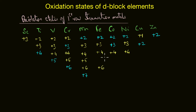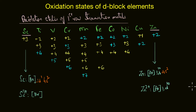There are only two elements that show a single oxidation state, and those are found at either extreme ends of the series: scandium and zinc. Scandium shows only the +3 oxidation state, whereas zinc shows only the +2 oxidation state. Both of these are favorable oxidation states as they result in a stable electronic configuration — in the +3 state, scandium acquires the noble gas configuration.